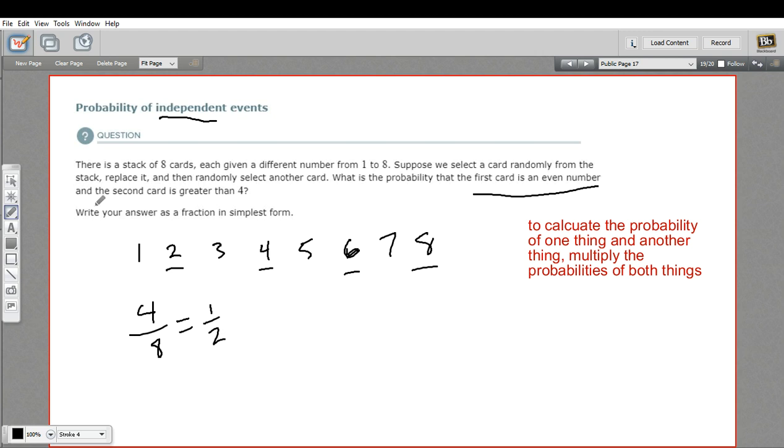Our second event says the second card is greater than four. How many cards are greater than four? Well, five, six, seven, and eight. That's four out of eight again, which can be simplified to one half.